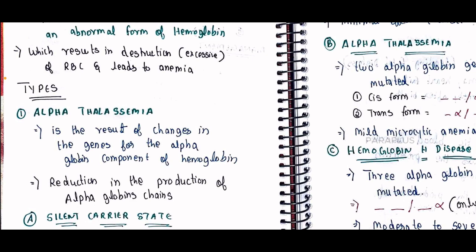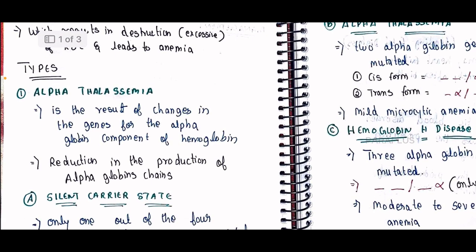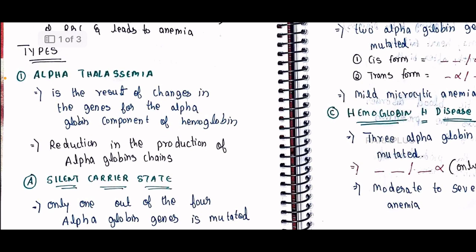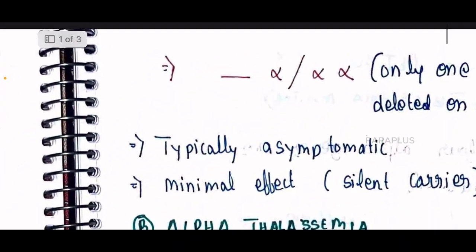Alpha thalassemia is the result of changes in the genes for the alpha globin of the hemoglobin. These gene changes cause a reduction in the production of alpha globin chains. Normally there are four alpha globin genes.